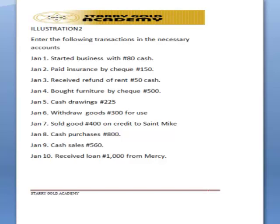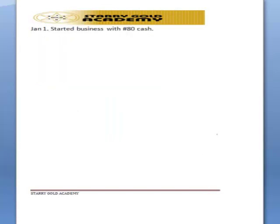Withdraw goods 300 for use on January 6th, sold goods 400 naira on credit to St. Mike on January 7th, cash purchases of 800 on January 8th, cash sales of 560 on January 9th, received loan 1000 from Mercy on January 10th. That is the question — we'll take it bit by bit and show the effects of each transaction.